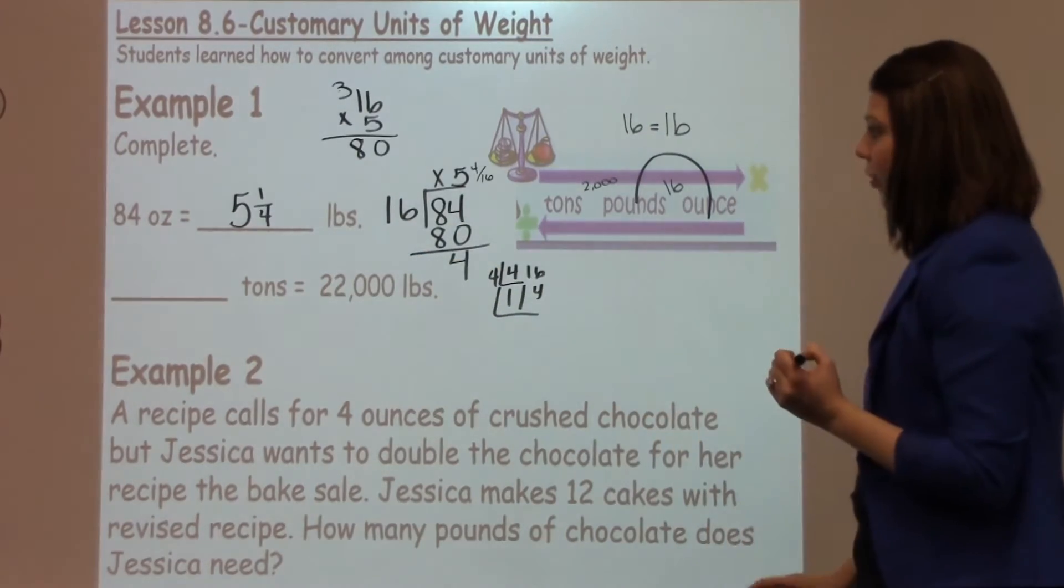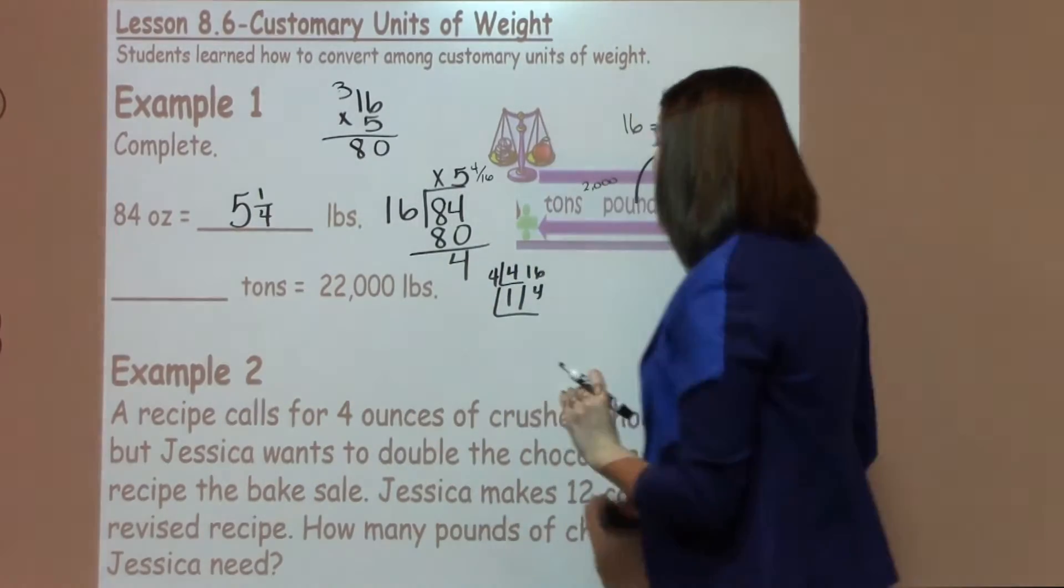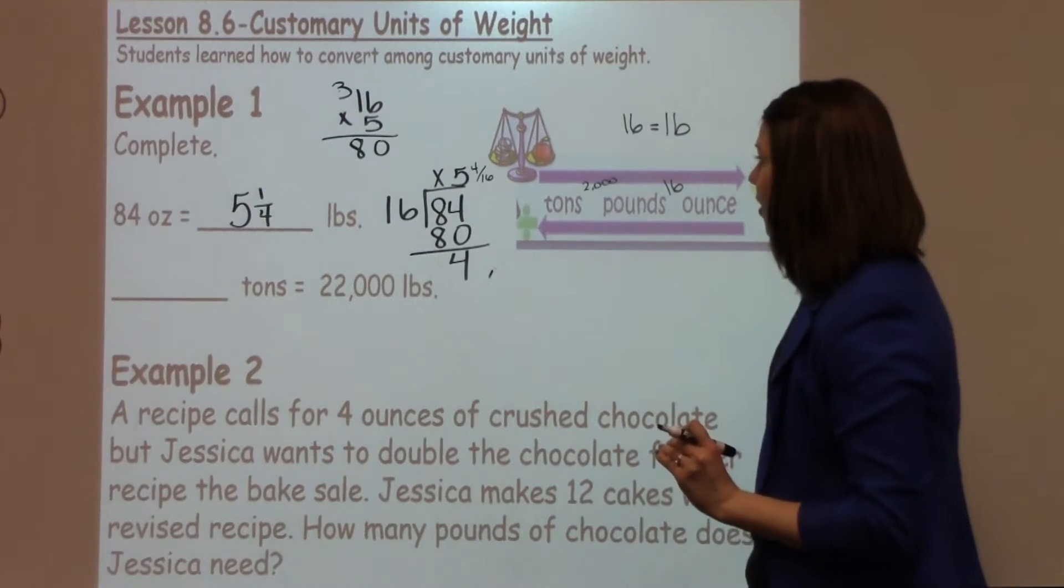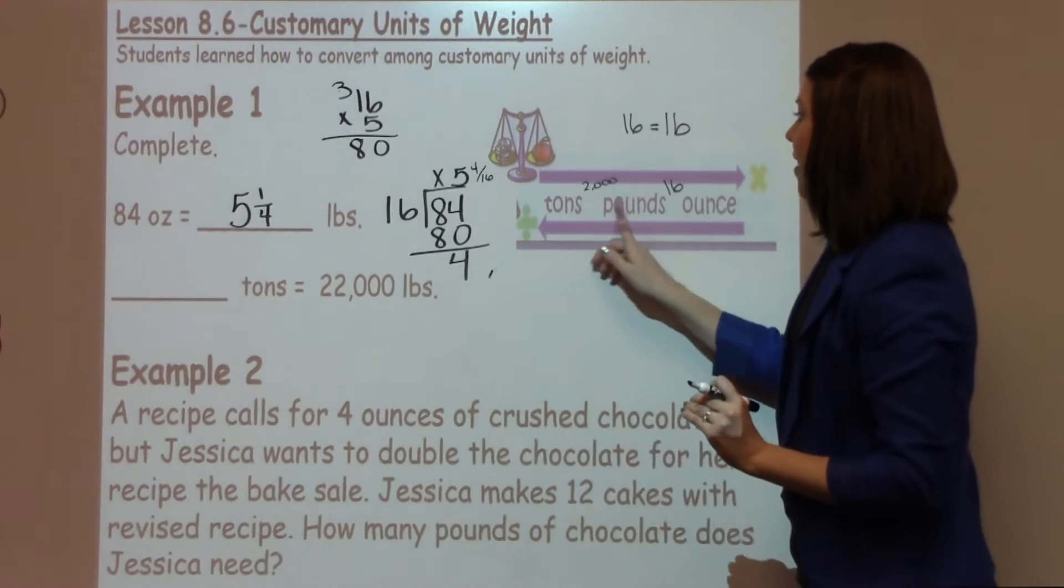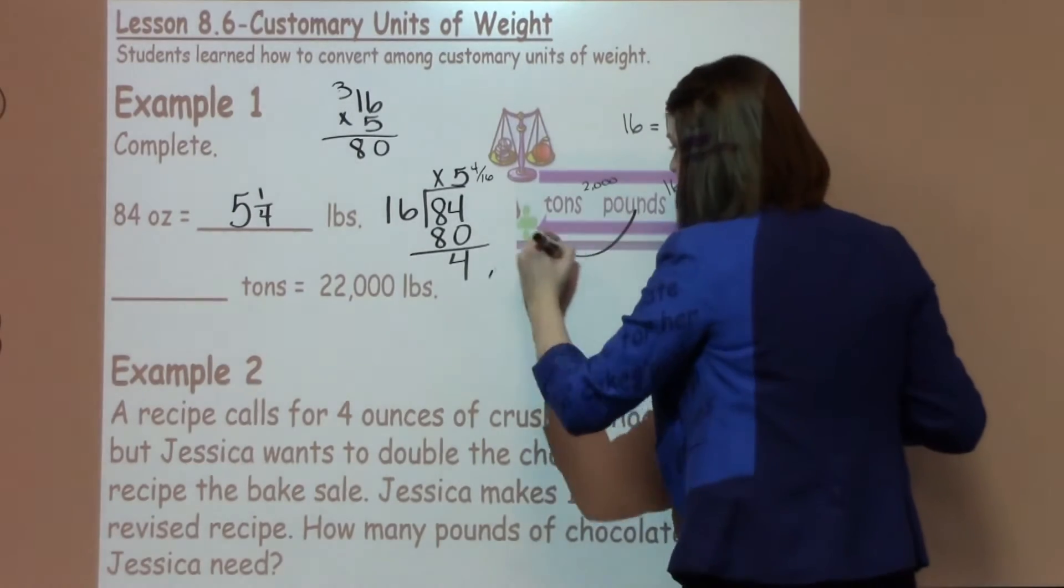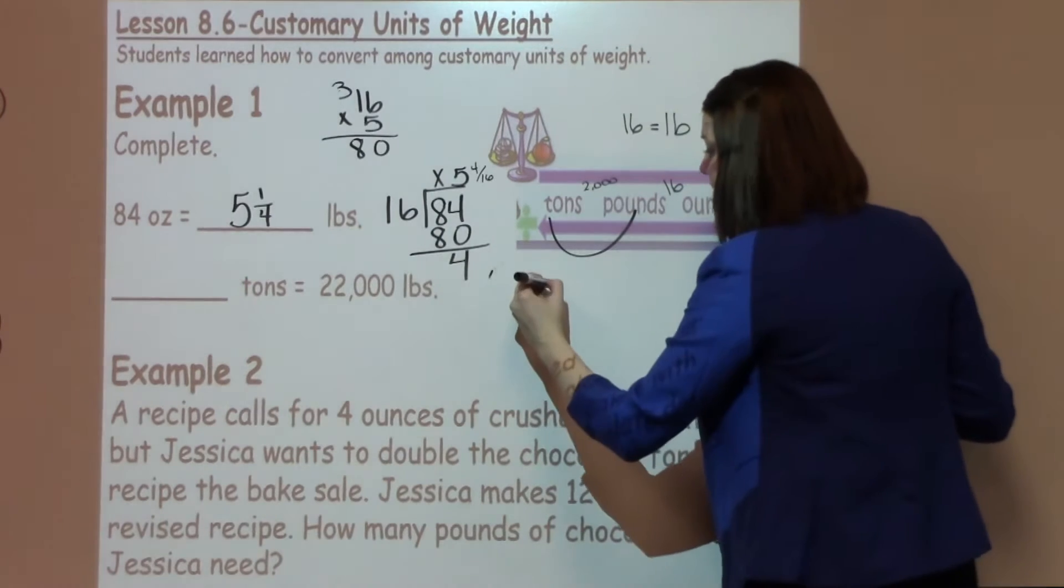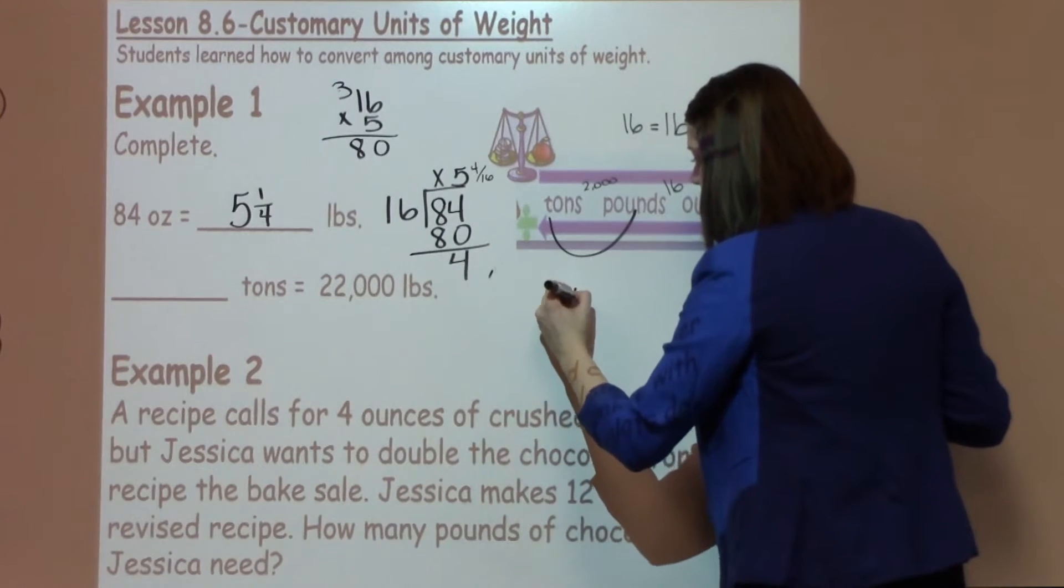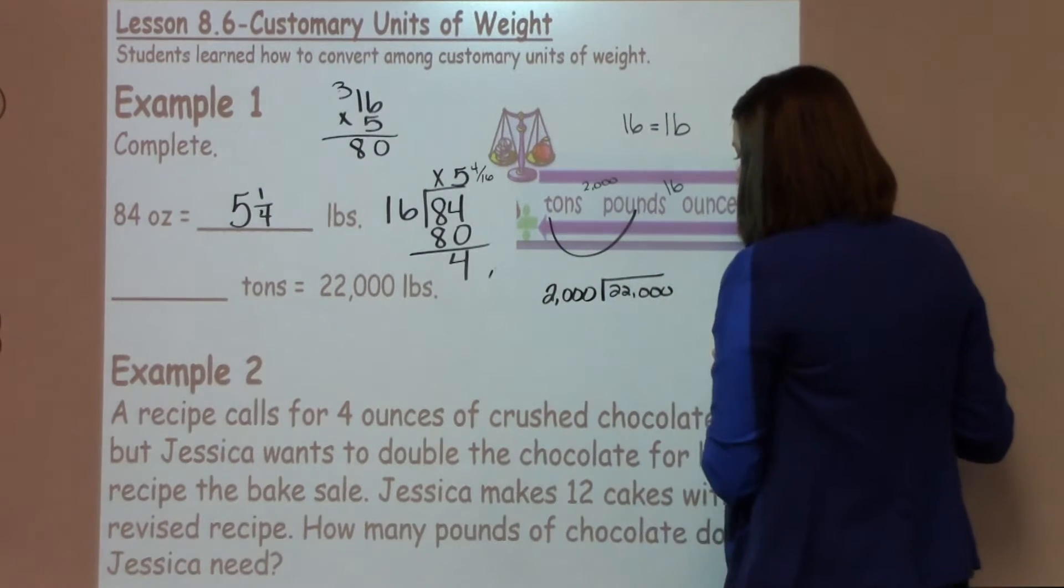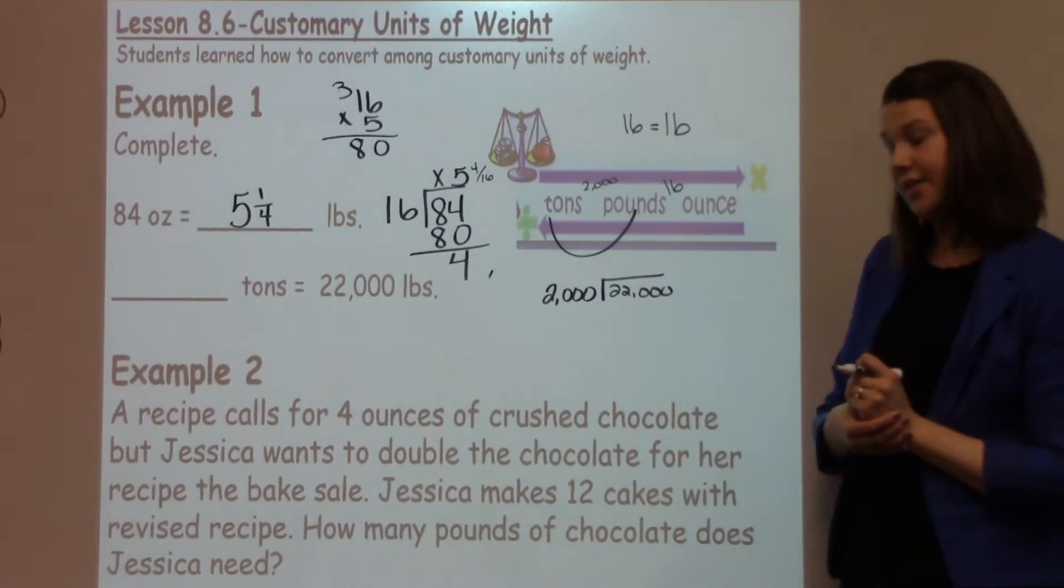Looking at our second part of our question, it says blank tons is 22,000 pounds. So when I look at this one, I'm going from my pounds to my tons. Noticing that I'm going to be moving to my left again, which means I'm going to divide. So I'm going to take my 2,000 on the outside of my house, and then I've got my 22,000 on the inside of my house. So I'm going to take 22,000 divided by 2,000.